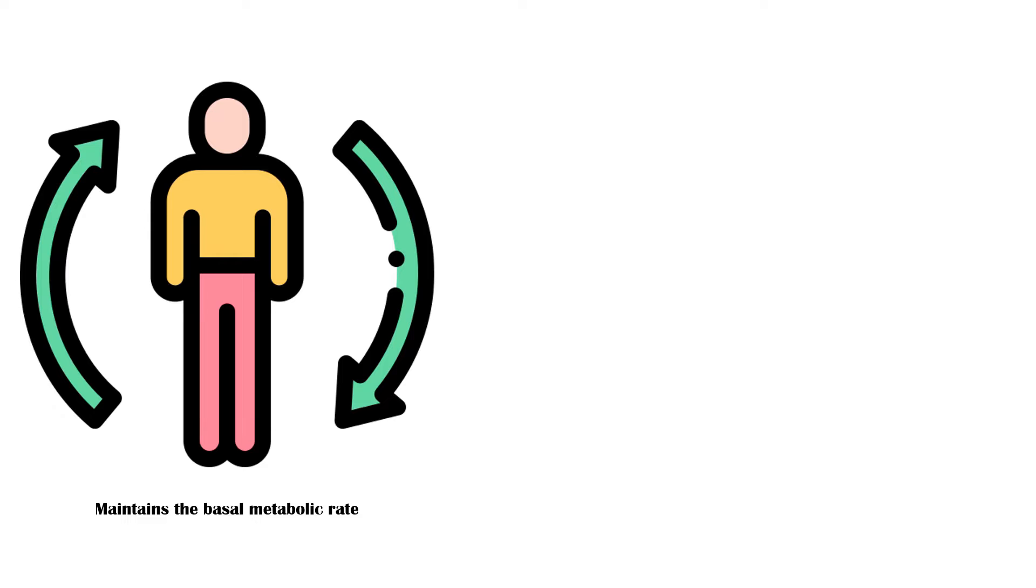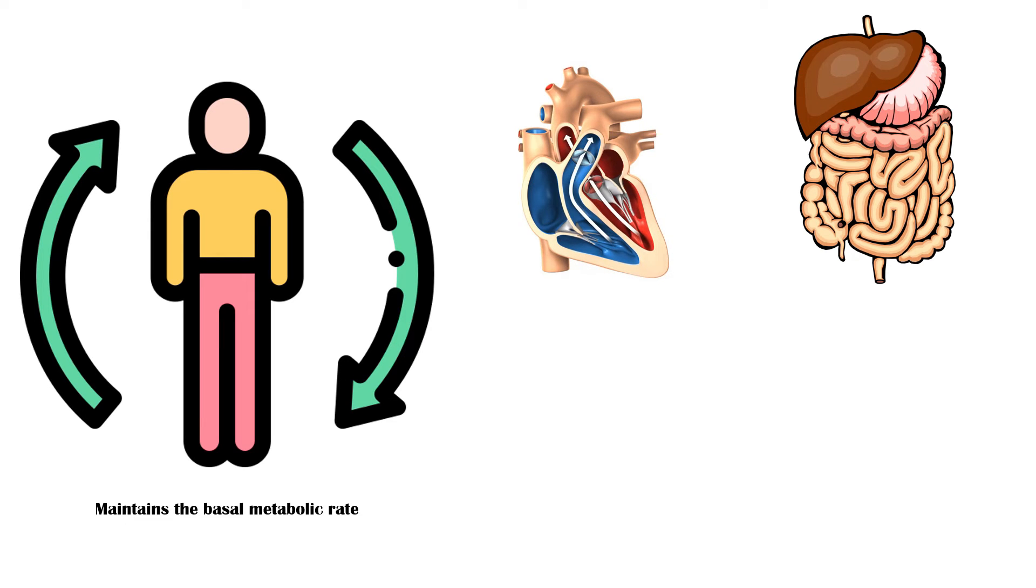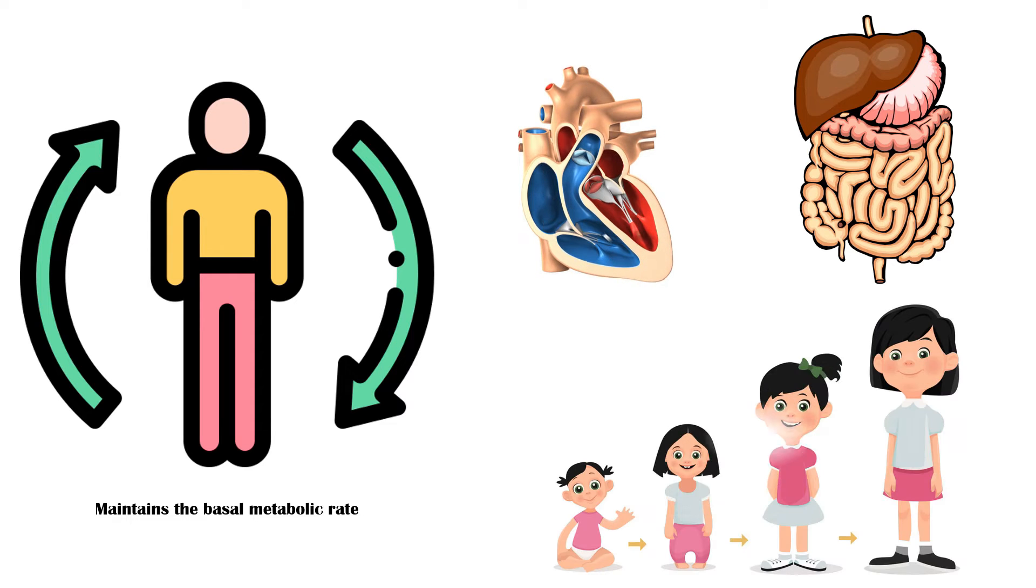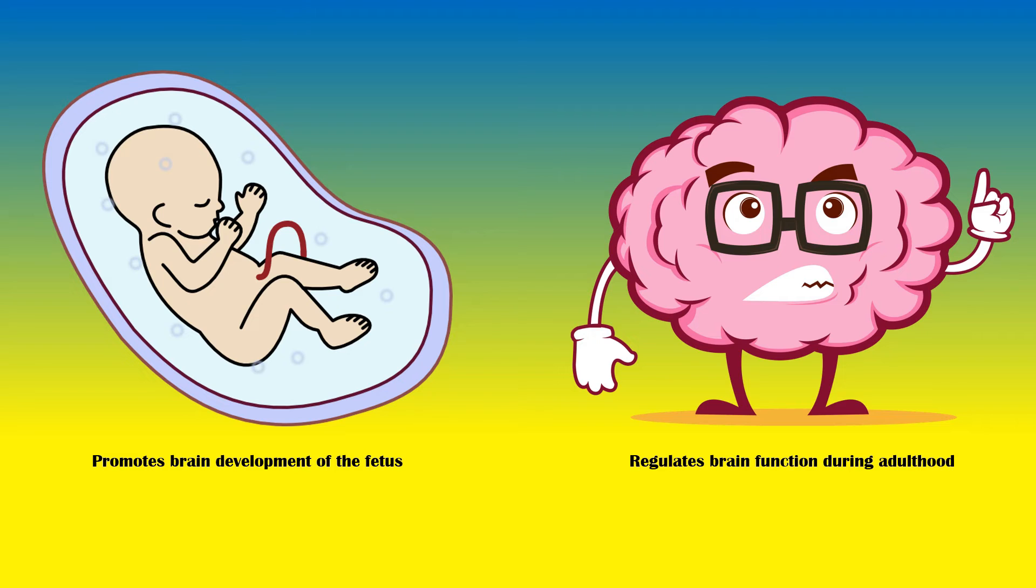In addition, it maintains the normal heart rate and rhythm, normal gastrointestinal motility. It also regulates normal growth and development, especially during childhood, and it promotes the brain development of the fetus. Moreover, thyroid hormones regulate brain function during adulthood.